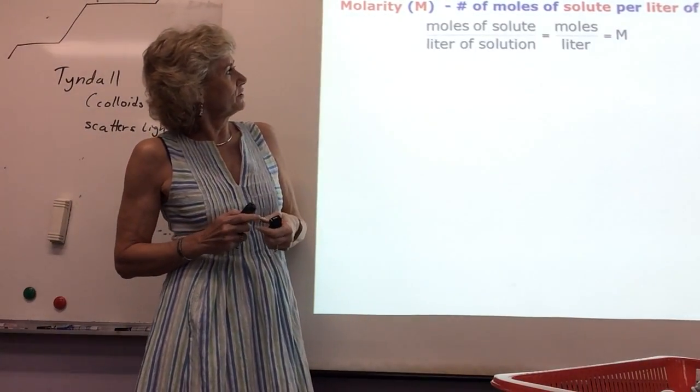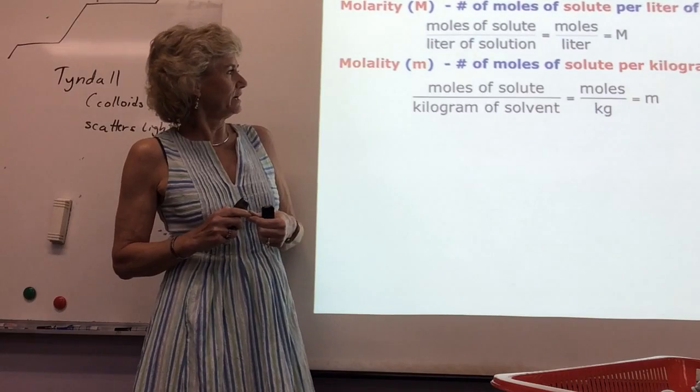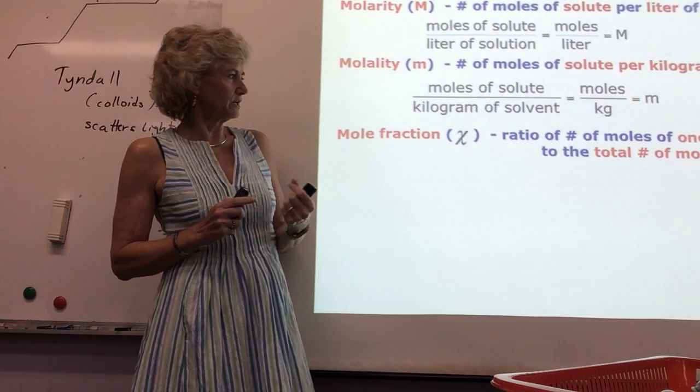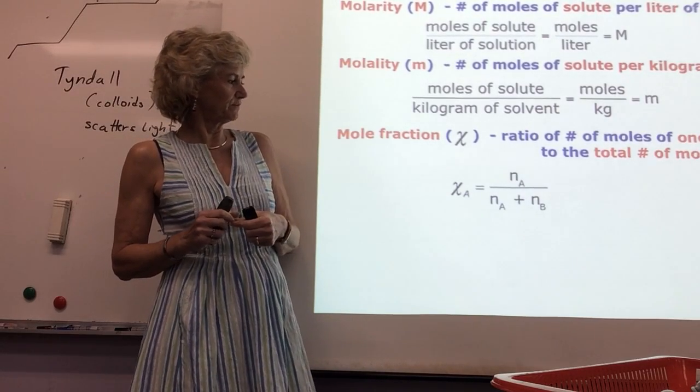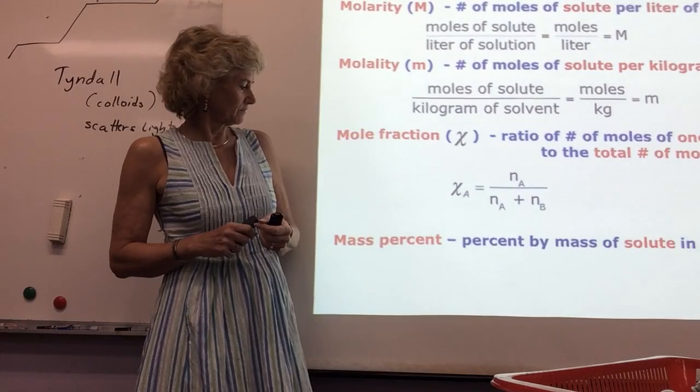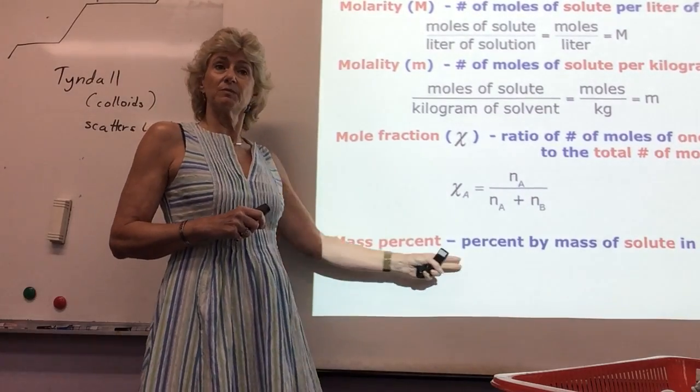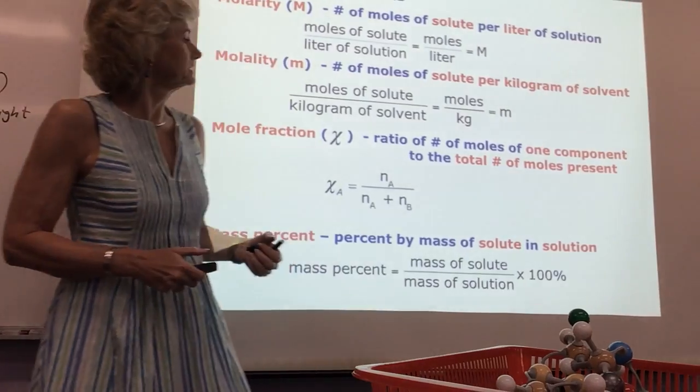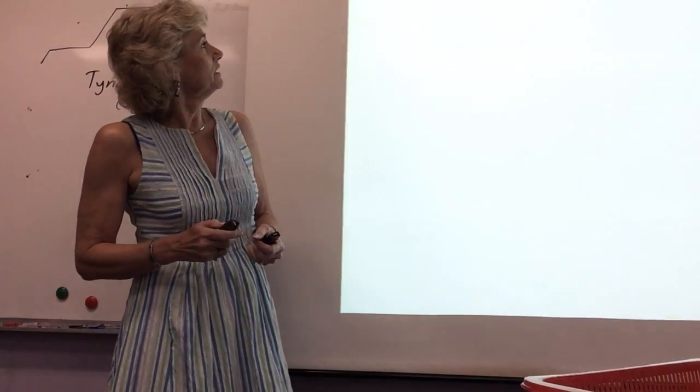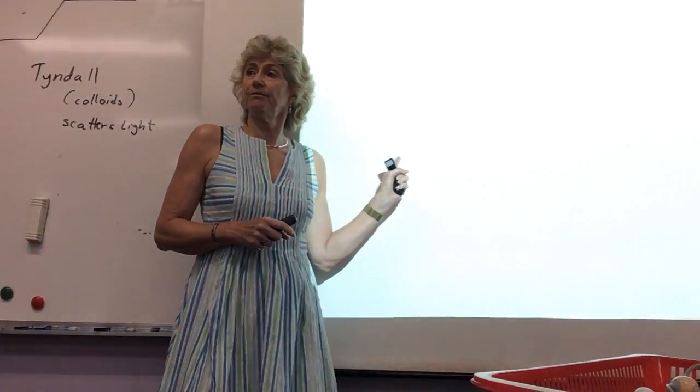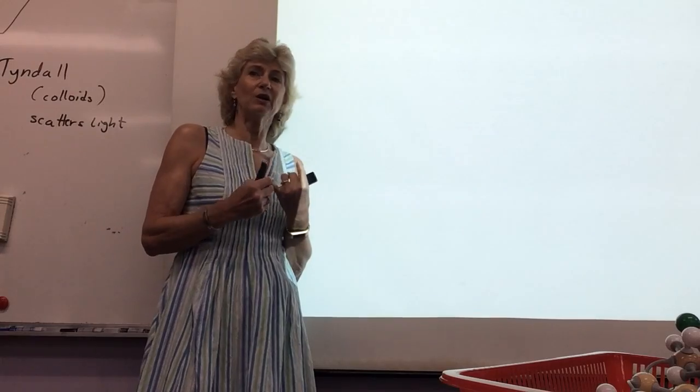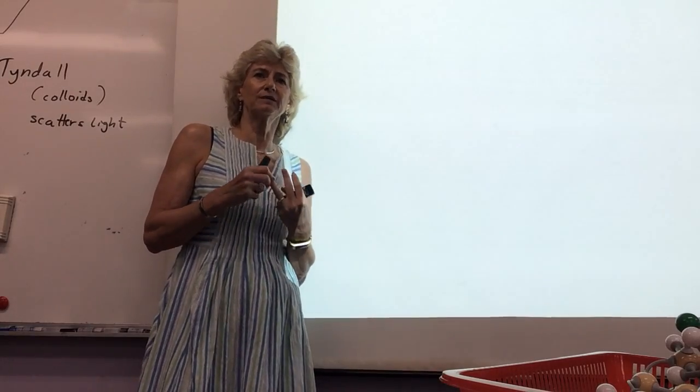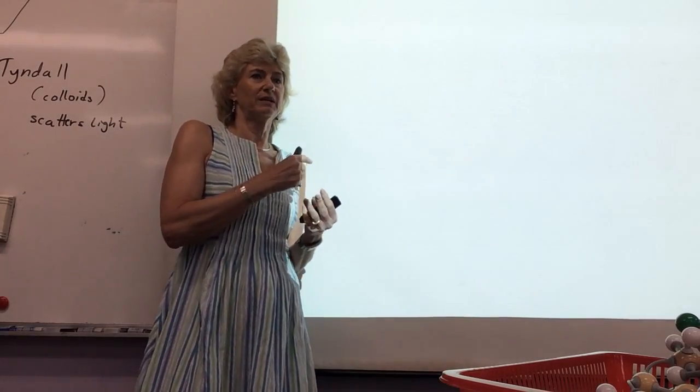Concentration, what we already said, moles of solute per liter. Easy to do. Molality, we can skip. Mole fraction, you already know. Moles of a gas over total moles. Okay. Mass percent has been removed from the AP. I noticed on the quiz, though, Adrian put one in. I've got to delete that for you. This is what you do need to know. Okay. So we don't need to know molal and colligative properties. Mass percent. Now you have to pay attention again.